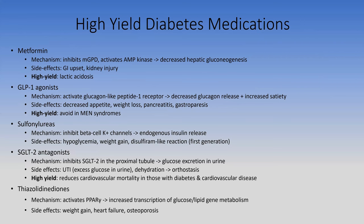GLP-1 agonists activate the GLP-1 receptor, helping regulate glucagon and satiety, which is why they're useful for obesity—they've been approved for obesity treatment as well. Side effects include weight loss (beneficial), pancreatitis (rare), and gastroparesis—slowing gastric emptying can worsen diabetic patients' ability to pass food. A high-yield point from commercials: avoid GLP-1 agonists in MEN syndromes due to potential risk for medullary thyroid cancer and pancreatic cancer.